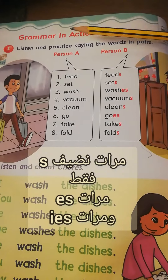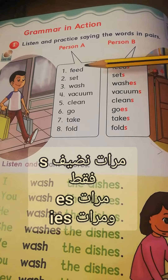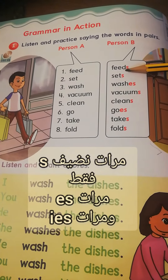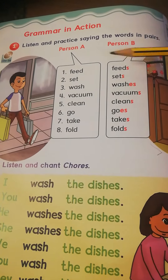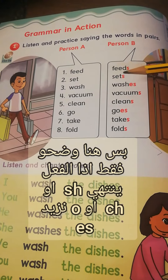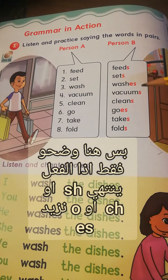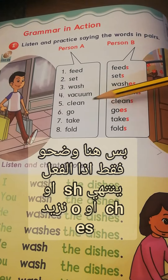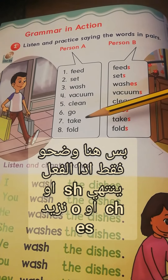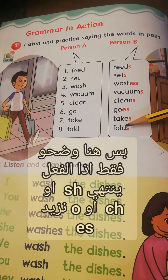ننتبه للقاعدة — جداً مهم. عندنا feed صارت feeds. Sit → seats. Watch → watches. Vacuum → vacuums. Clean → cleans. Go → goes. Take → takes. Fold → folds. ليه هنا أضفنا s؟ متى نضيفها؟